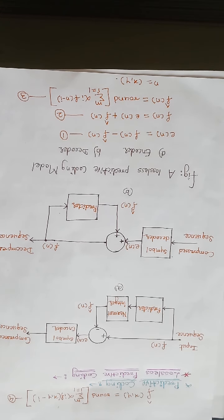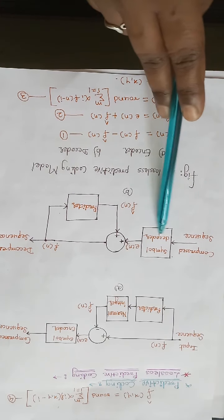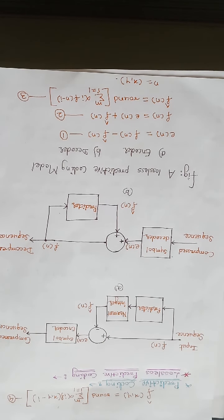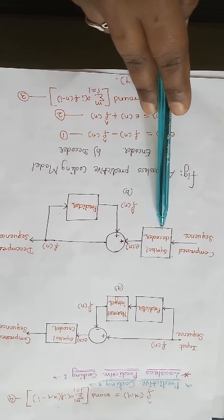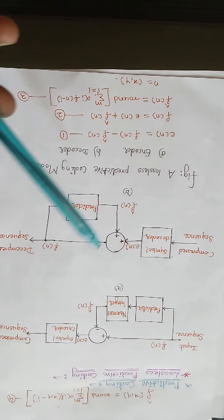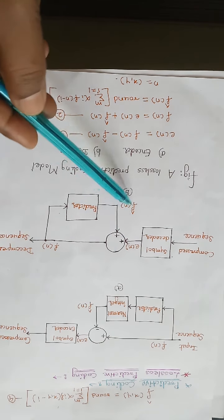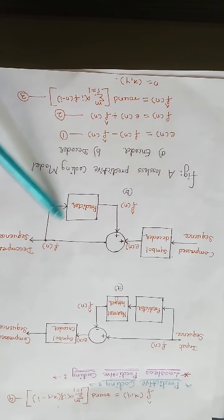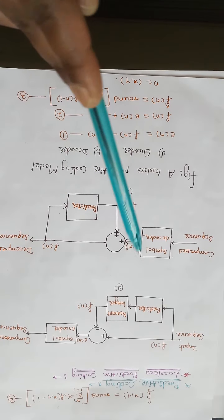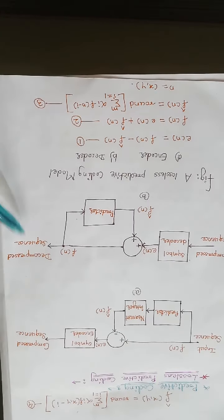From the decoder, the compressed sequence is input to the symbol decoder. The decoder reconstructs E of N from the received variable length code word and performs the inverse operation of the encoder. F of N is the output of the decoder and can be defined as E of N plus F-cap of N, where the predictor is placed in the feedback loop. This will decompress or reconstruct the original input signal F of N, that is the decompressed sequence.